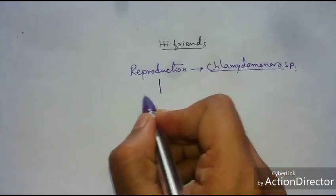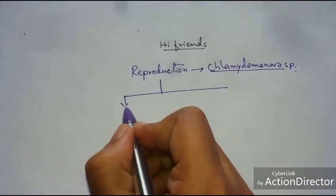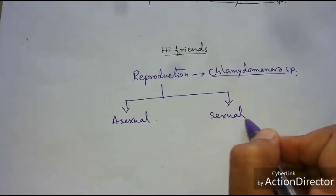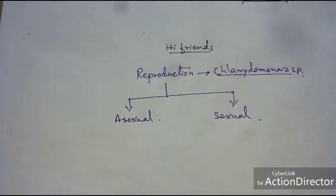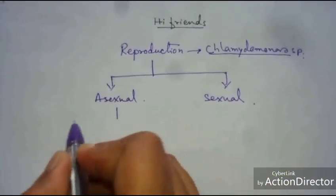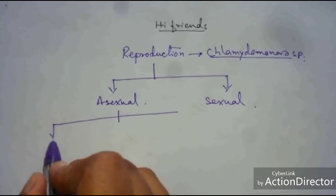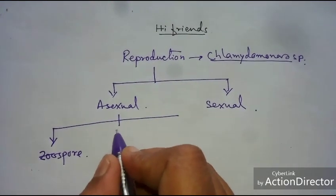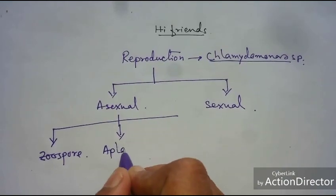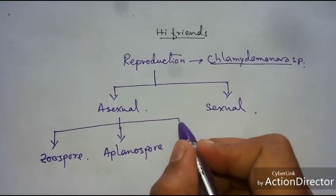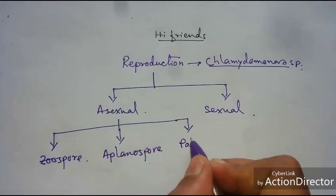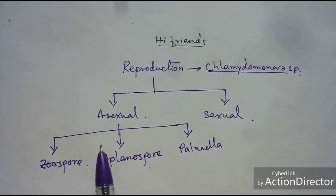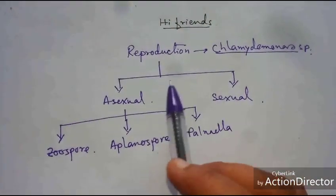Reproduction in Chlamydomonas are two types: first is Asexual and another is Sexual. In Asexual Reproduction, mainly three types of spores are involved: first is Zoospore, second is Aplanospore, and the third is Palmella. These three types of spores are found during Asexual Reproduction of Chlamydomonas.